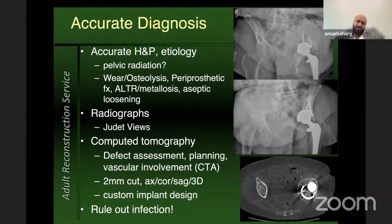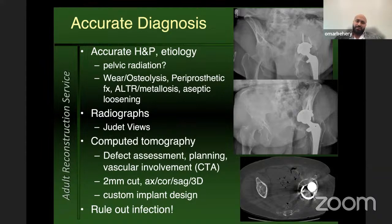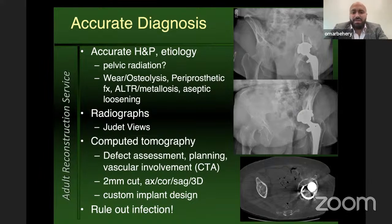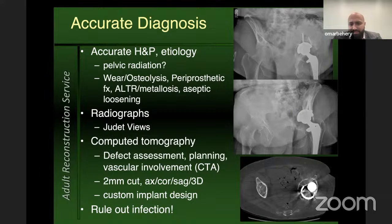I start with simple radiographs — typically an AP pelvis and Judet views — to look at the columns. The iliac oblique and obturator oblique images show the extent of posterior and anterior column bone loss, giving you most of the picture. The next step is typically a CT scan, not only to assess the defect but also if I'm considering a custom implant design. I request 2mm slices with multiple reformats: axials, coronals, sagittals, and usually a 3D reconstruction to evaluate both columns, the direction of bone loss, and the available bone stock for reconstruction.